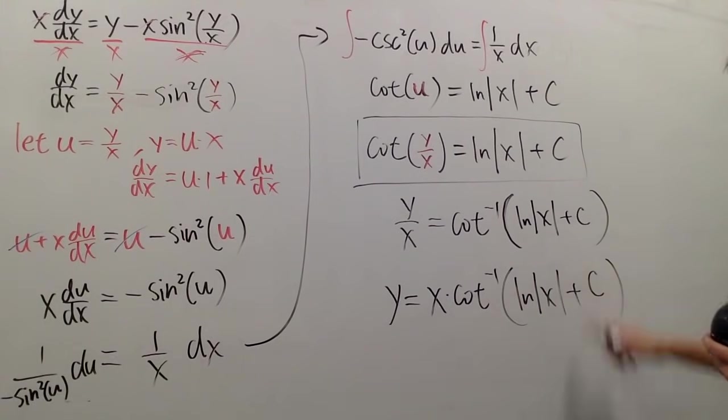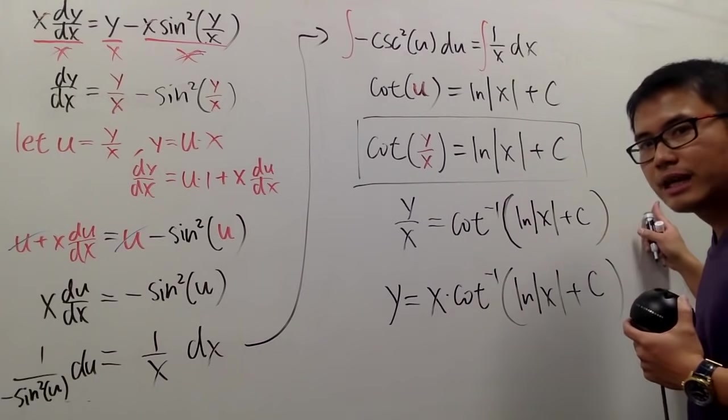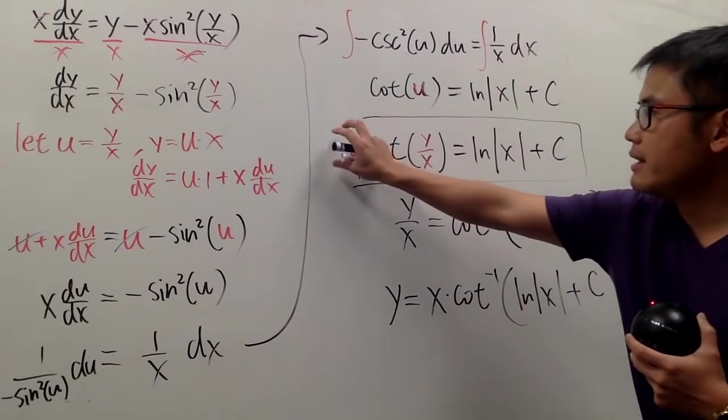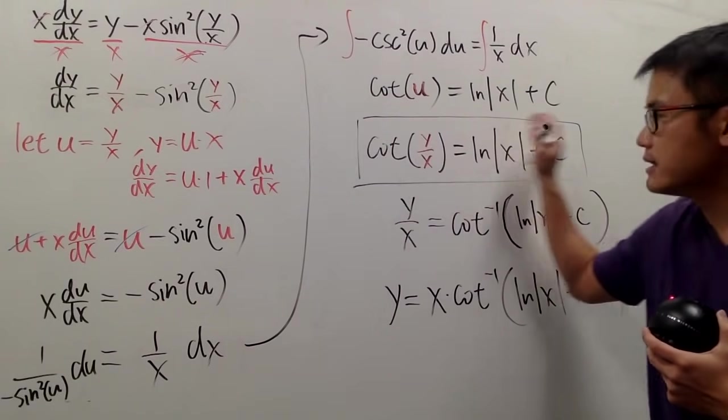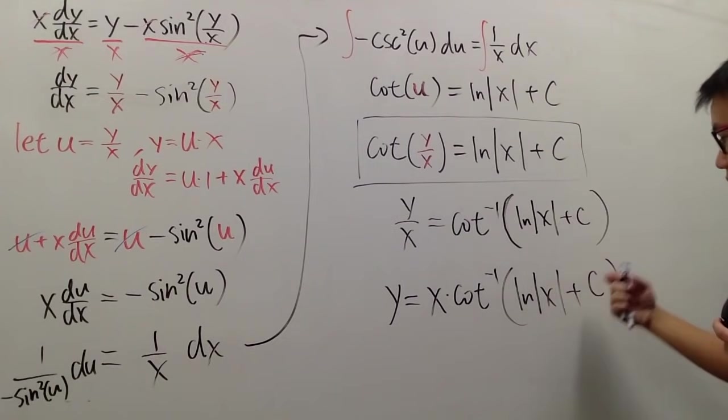A small common mistake is that people will have the plus c on the outside, but no. Because we're applying the inverse cotangent on both sides, the entire right-hand side. The c is inside of the inverse cotangent.